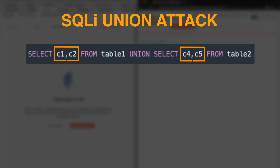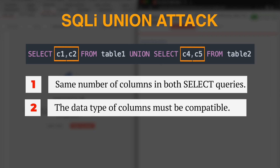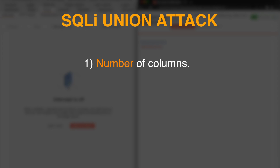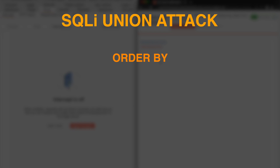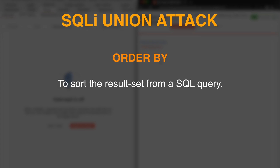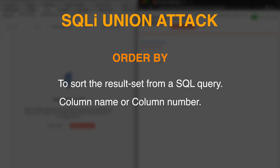There are two basic rules for combining the result set of two SELECT queries when using the UNION operator: the number of columns in both SELECT queries must be the same, and the data type must be compatible. In order to inject our own query and ensure that the application executes the UNION SELECT query without an error, first we need to determine the number of columns and then the data type of the columns in the original SQL query that the filter function is using. We can use the ORDER BY keyword to determine the number of columns. In the ORDER BY clause, we can specify the column name or column number. Since we don't know the column names, we will use column numbers starting from 1 and increase the number until we get an error message.